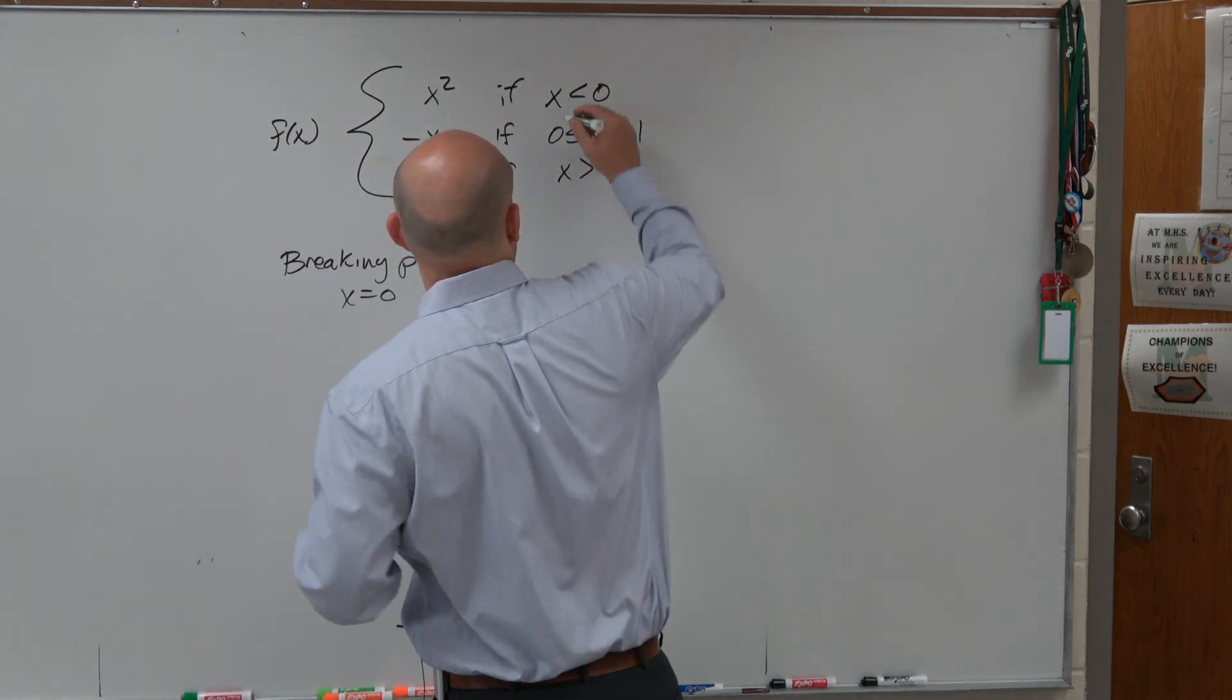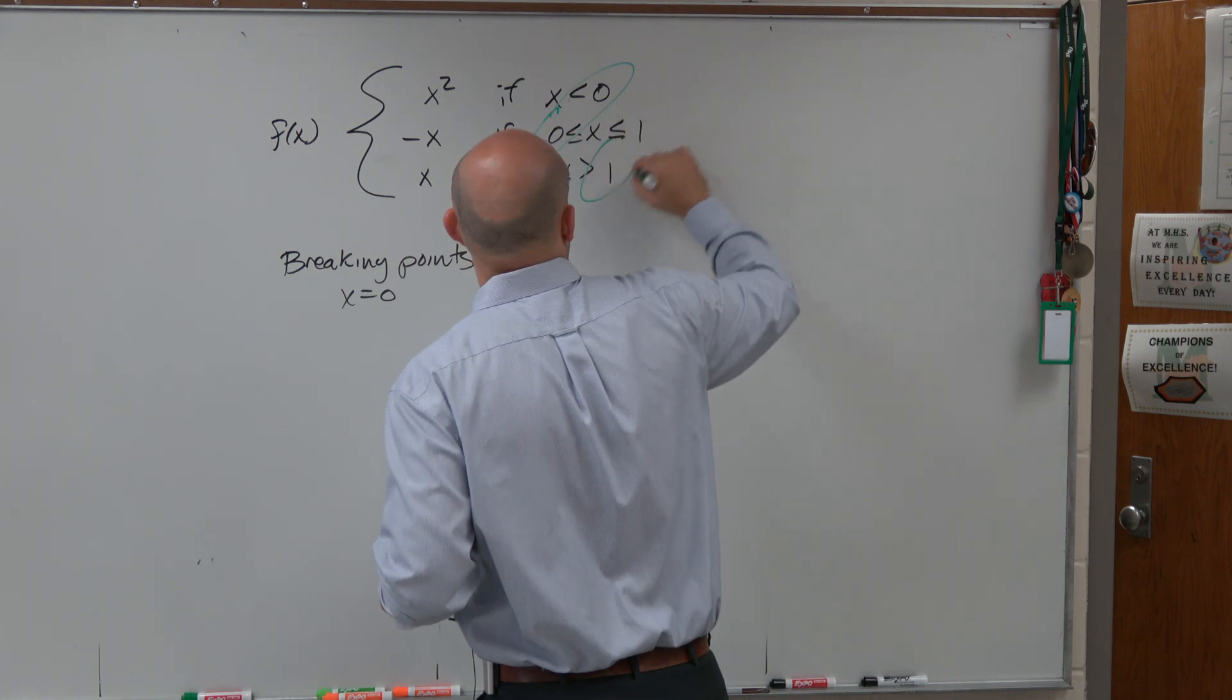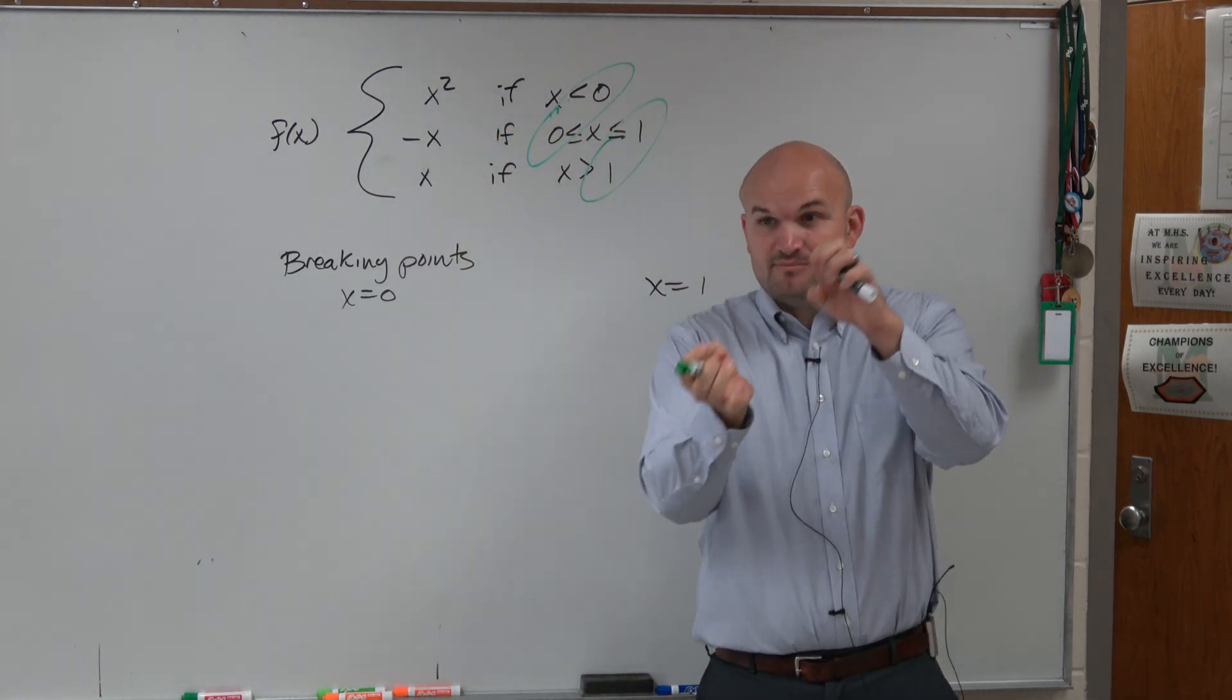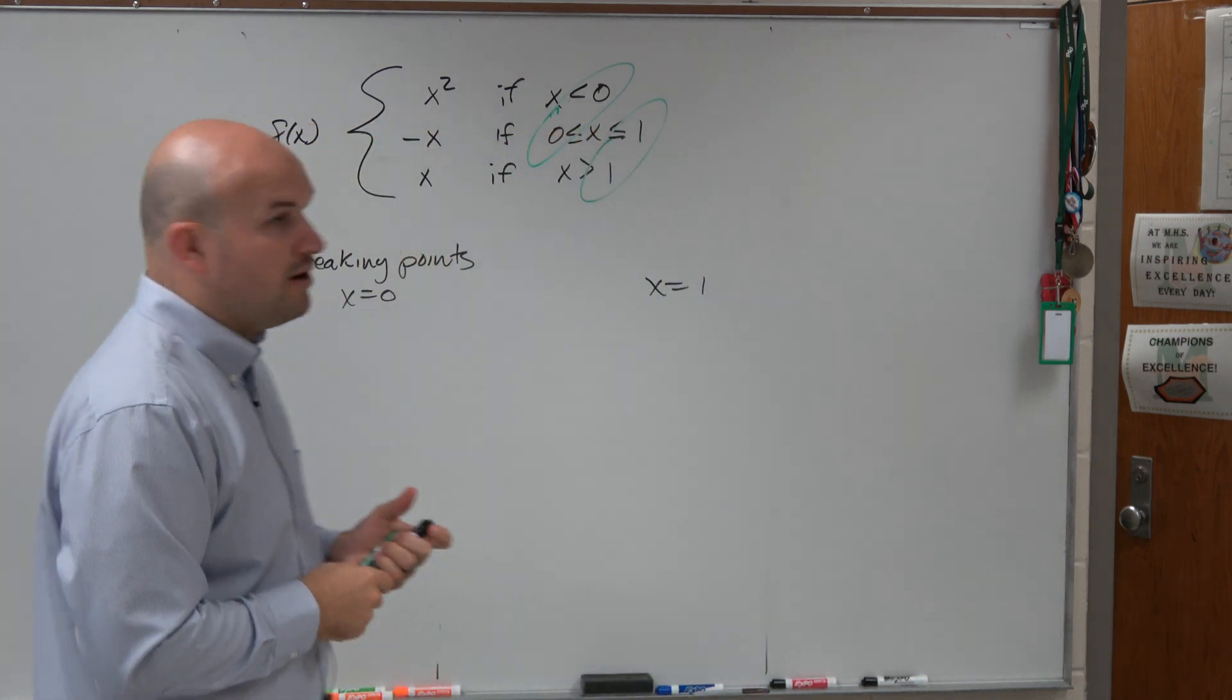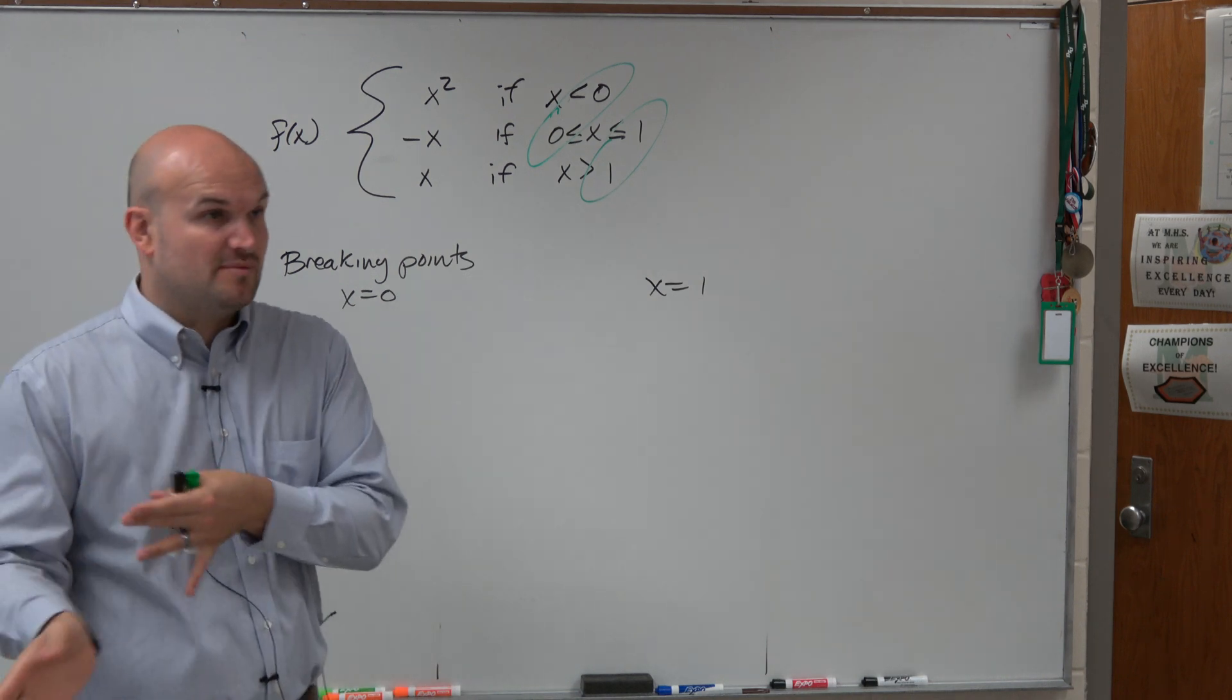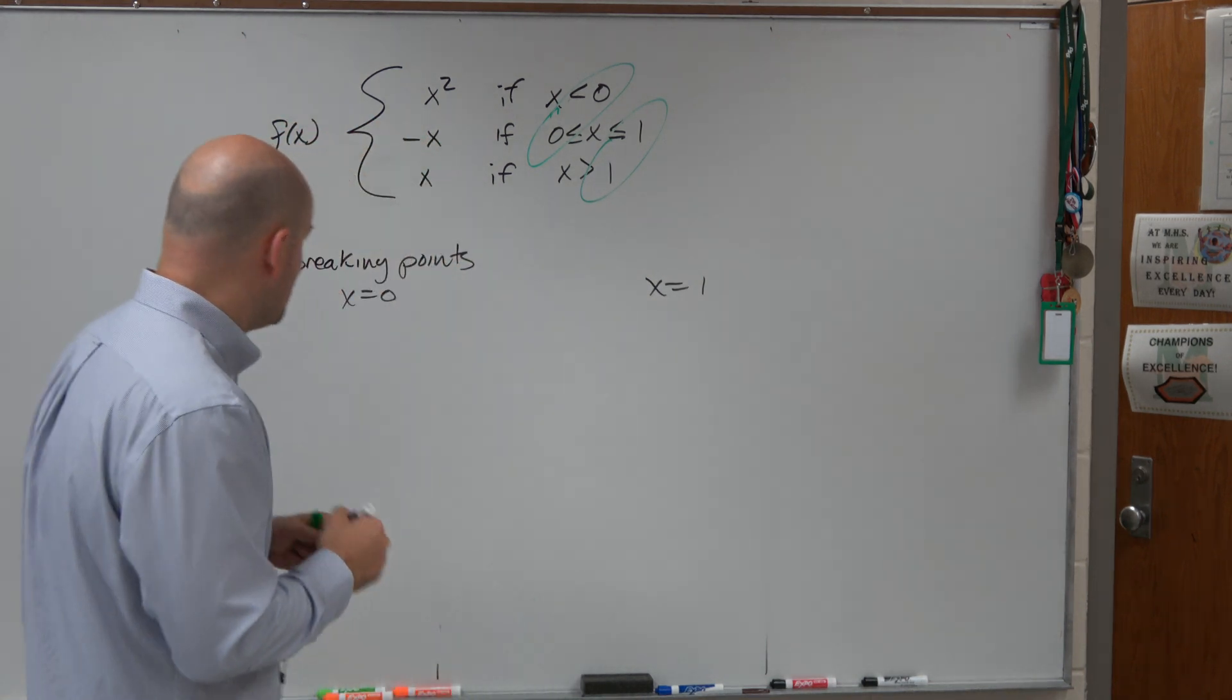Another way to look at it, those two values, that's where these graphs, that's where they can be disjoint. So what we want to do then is to make sure if this is continuous, we want to look at what is the limit from the left and from the right at each of those points.